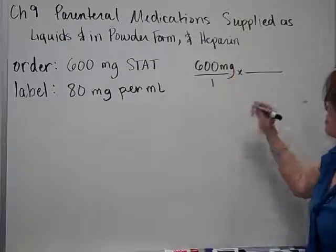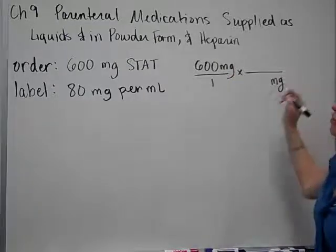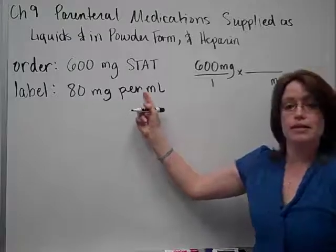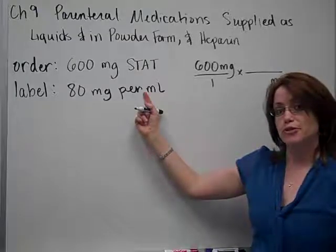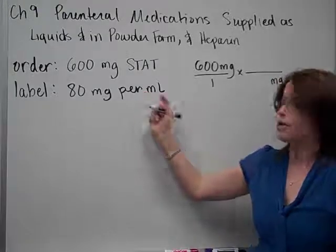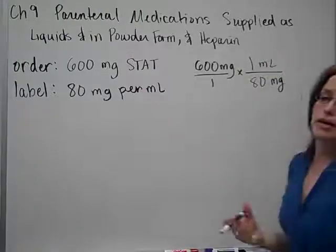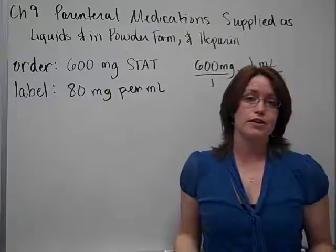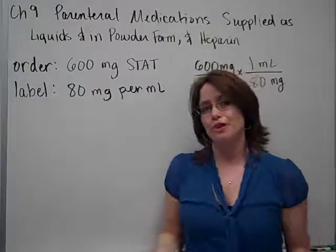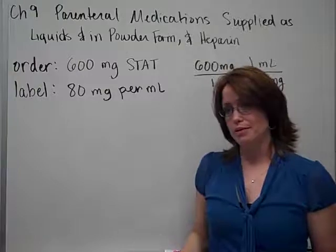I know that when I do dimensional analysis, I need milligrams on the bottom. Well, I can get something that will get me from milligrams to milliliters by using the label. So I'm going to have 80mg. It's the same thing as one milliliter. Obviously, that's not something you would find on your formula sheet. That is something you would find in the problem or on the label. So keep that in mind.